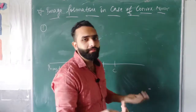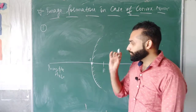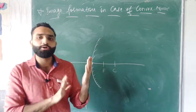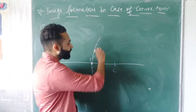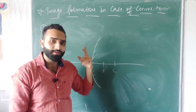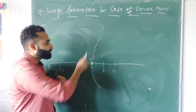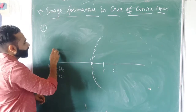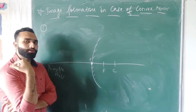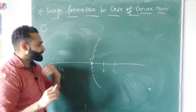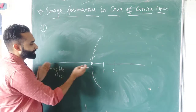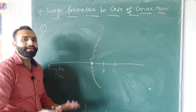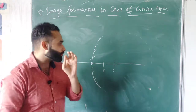Where do we place the object? We always place the object in front of the reflecting surface. If we place the object behind the polished side, the image will never form. The image only forms when the object is in front of the reflecting surface. So there are only 2 cases: when the object is at infinity, and when it is placed anywhere in front of the mirror.